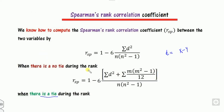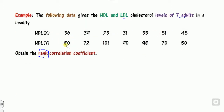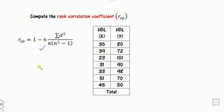First, decide which formula to use. Check the x values — is 36 repeated? No. Is 39 repeated? No. Is 23 repeated? No. Is 31 repeated? No. Similarly for y — is 80 repeated? No. Is 101, 72 repeated? No. Since no element is repeated more than once, you use the simple formula without the tie correction.